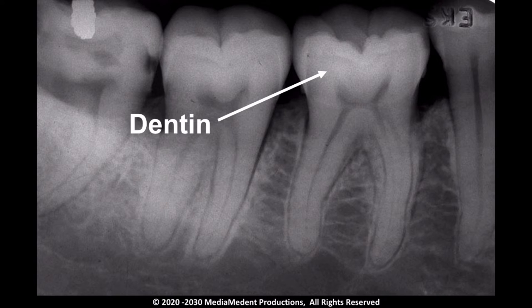Because dentin has a density similar to bone, it has a radiographic appearance similar to bone. Covering the surface of the tooth's root is a layer of cementum. It is present in only a thin layer, and because the density of cementum is similar to dentin, cementum is not usually observed.